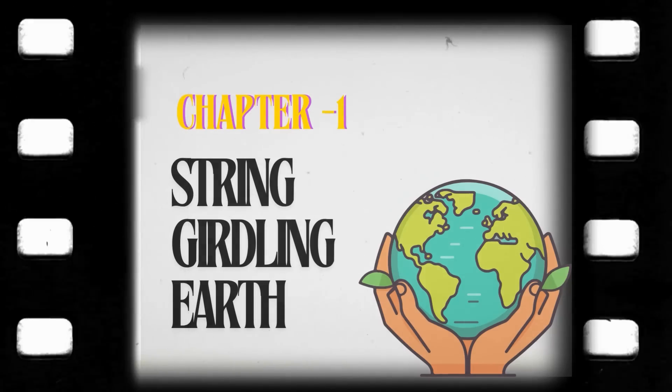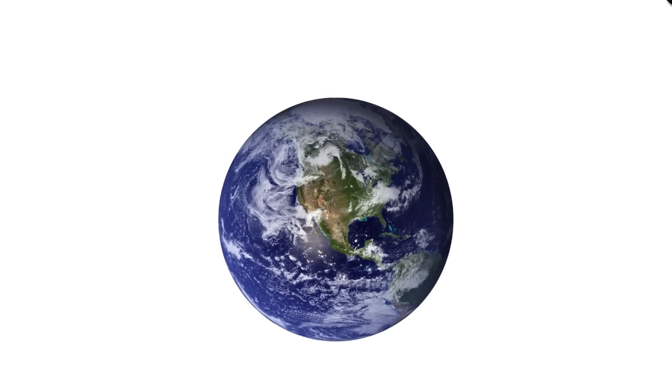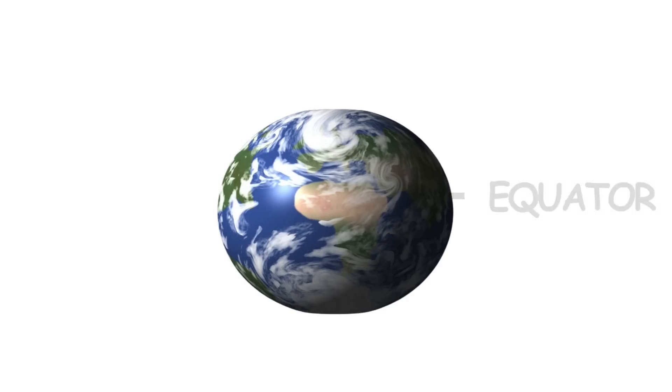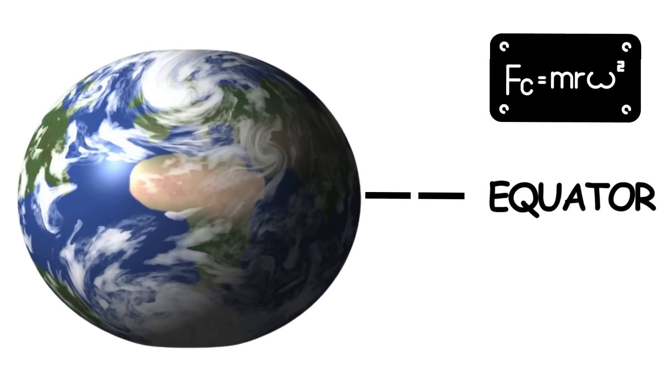String-girdling Earth. As most people know, Earth is round. Obviously, it's not a perfect ball. In fact, it bulges out slightly at the equator due to centrifugal force.